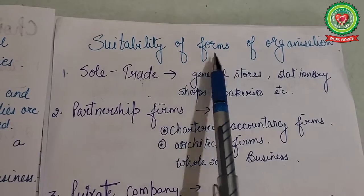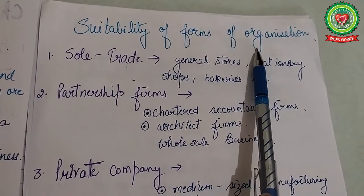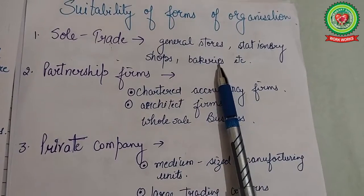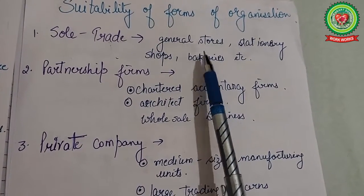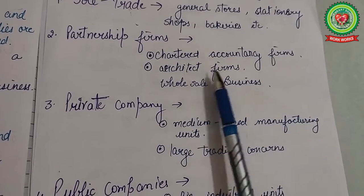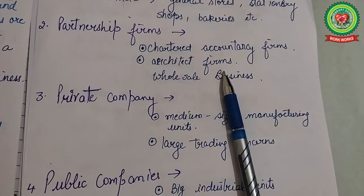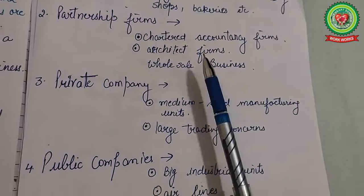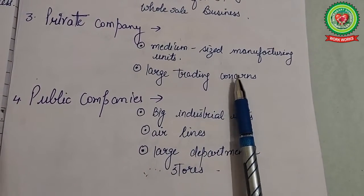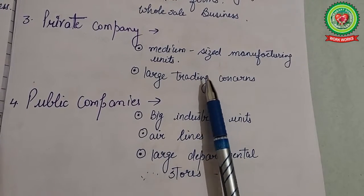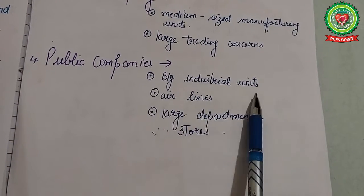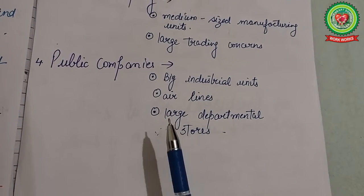Our next topic is suitability of forms of organization. Sole trade business is suitable for general stores, stationery shops, bakeries, or small factories requiring limited capital and personal knowledge. Partnership firms are suitable for professional services such as chartered accountancy firms, architect firms, wholesale businesses, or medium-sized firms. Private companies are suitable for medium-sized manufacturing units and large trading concerns. Public companies are suitable for big industrial units, airlines, large departmental stores, and enterprises requiring large capital.